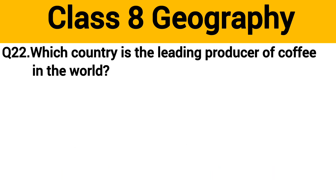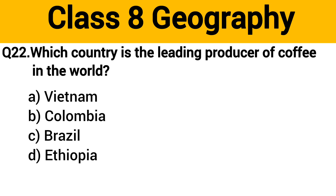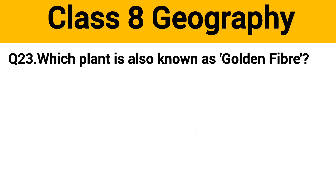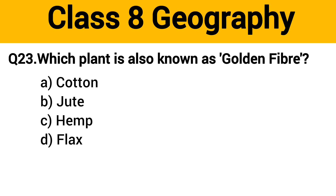Question number 22: Which country is the leading producer of coffee in the world? The right answer is option C: Brazil. Question number 23: Which plant is also known as golden fiber? The right answer is option B: jute.